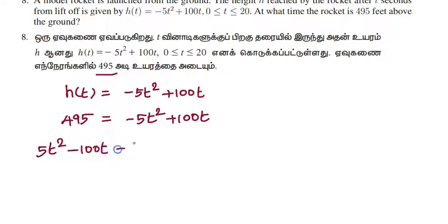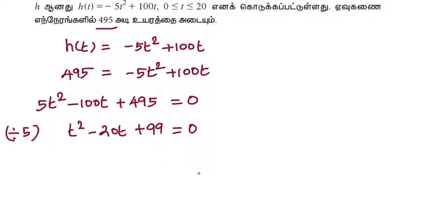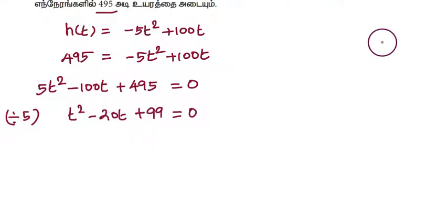This is a quadratic equation. Let's divide by 5. So t² - 20t + 99 = 0.